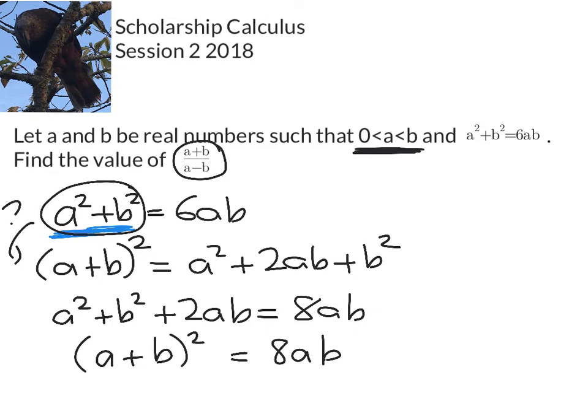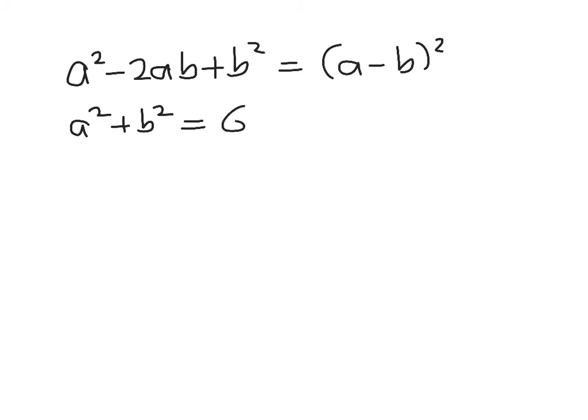Now I'm going to do the same thing for (a - b)². a² minus 2ab plus b² is equal to (a - b)². So we've got a² plus b² equals 6ab.